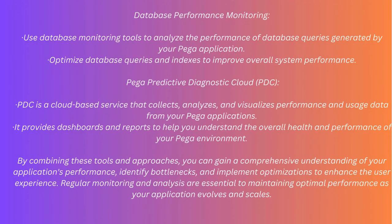Database Performance Monitoring: Use database monitoring tools to analyze the performance of database queries generated by your PEGA application, and optimize queries and indexes to improve overall system performance. PEGA Predictive Diagnostic Cloud (PDC): PDC is a cloud-based service that collects, analyzes, and visualizes performance and usage data from your PEGA applications, providing dashboards and reports to help you understand the overall health and performance of your environment. By combining these tools, you can gain a comprehensive understanding of your application's performance, identify bottlenecks, and implement optimizations. Regular monitoring and analysis are essential to maintaining optimal performance as your application evolves and scales.